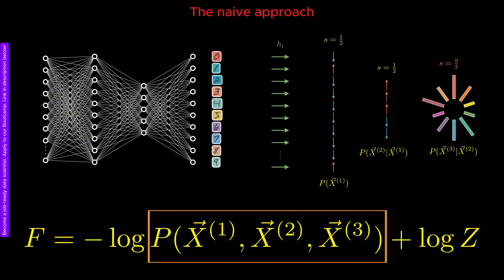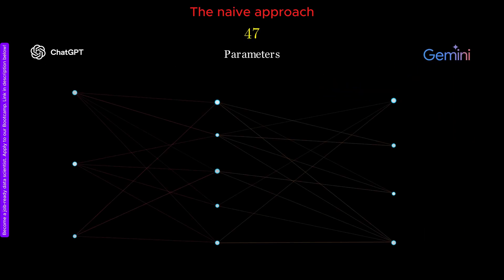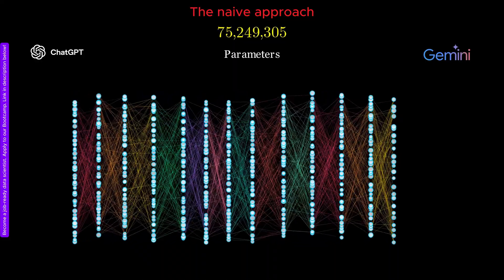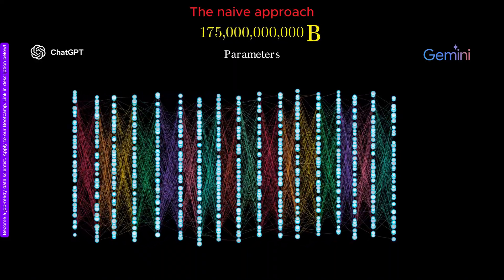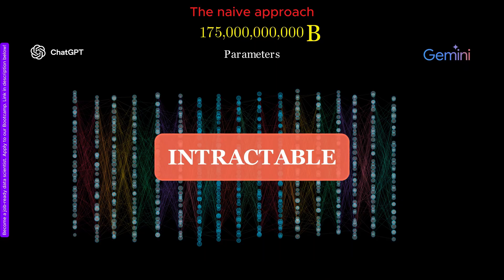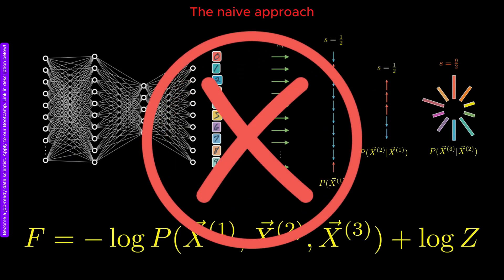However, can we realistically apply that method to more complicated AI models? This question becomes even more challenging when we consider that the models behind systems like ChatGPT or Google's Gemini are extraordinarily complex. They contain billions of parameters, intricate attention mechanisms, and deep hierarchical structures. Attempting to explicitly merge the probabilities of all their internal components quickly becomes intractable. In such cases, the chain rule approach appears naive.